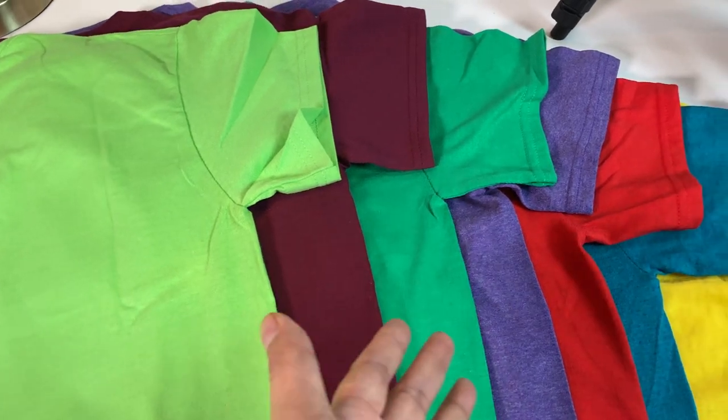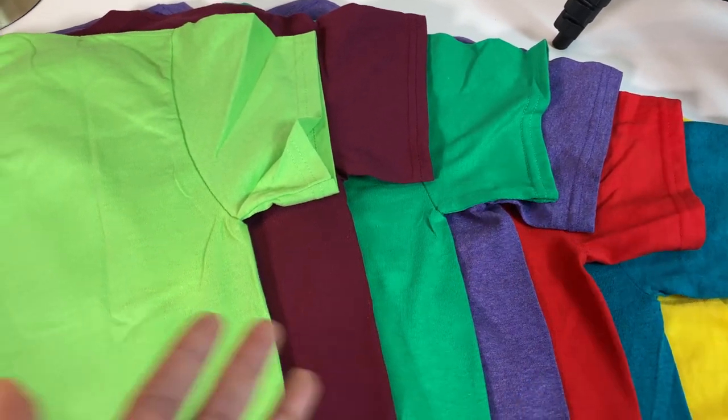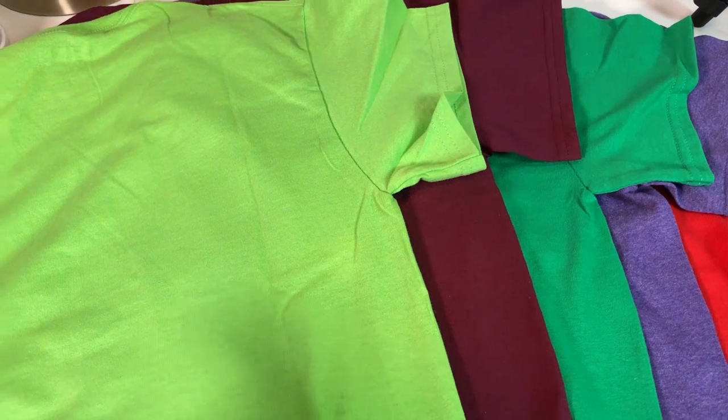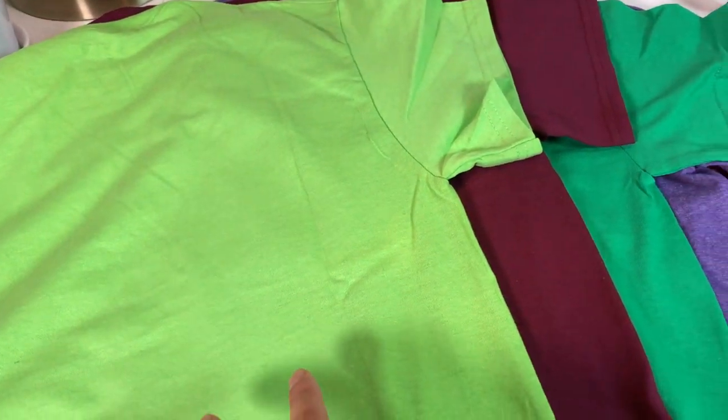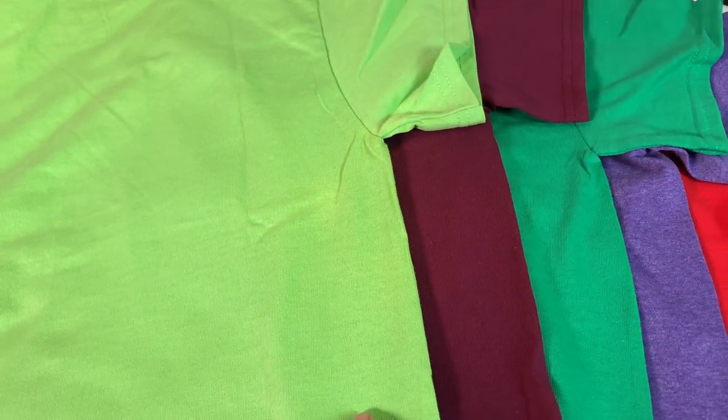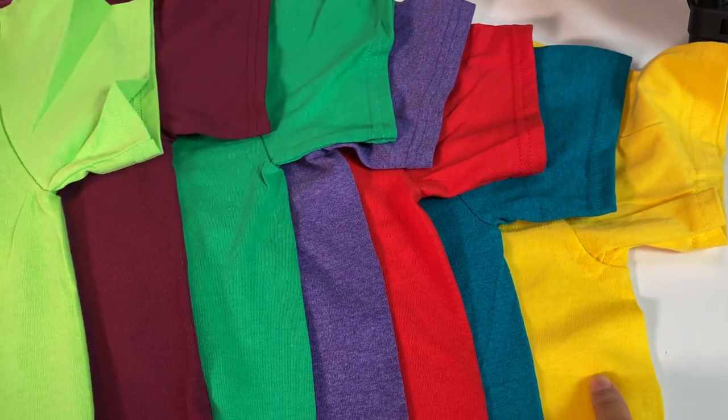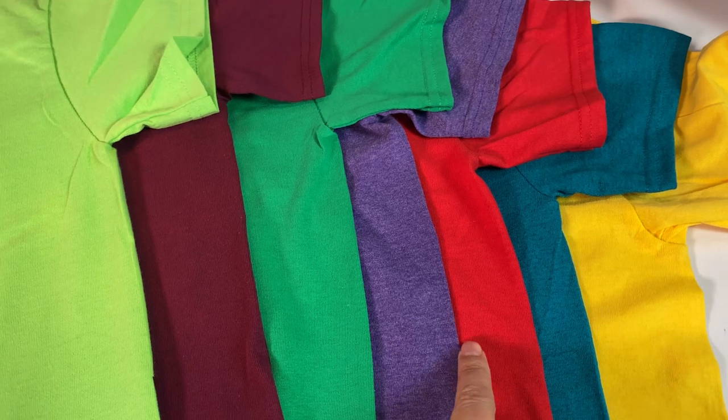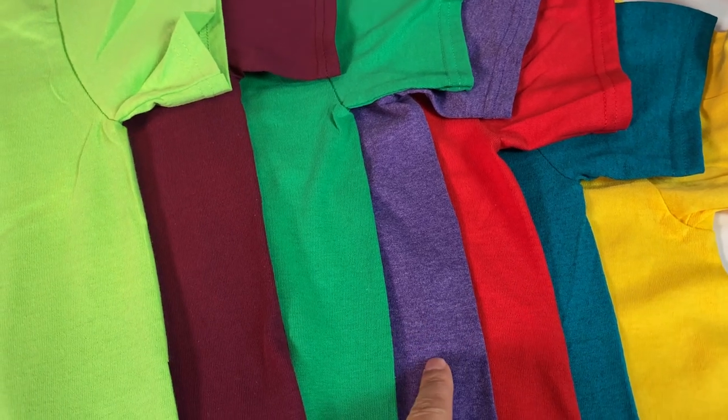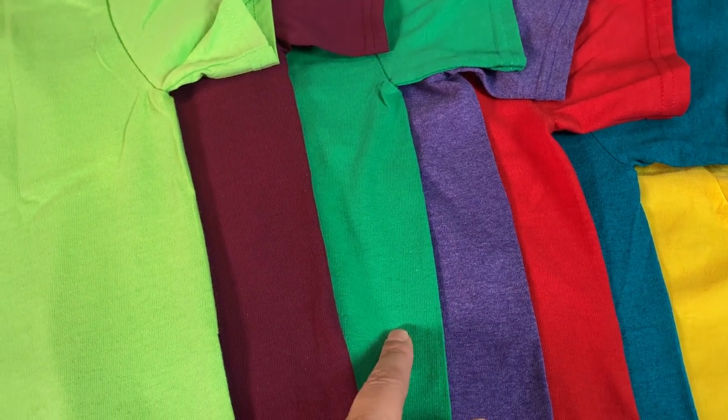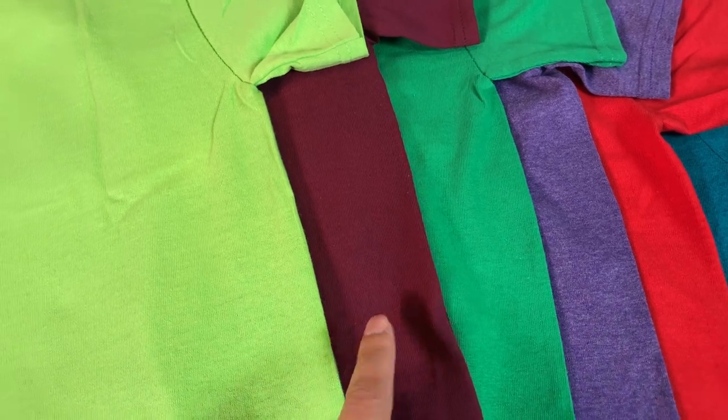These are the items you're going to need: seven different colored t-shirts or long sleeve shirts. You can get these at any craft store or big box store. I prefer to get neon green for Dopey because that's more recognizable, and then I got yellow for Doc, teal for Happy, red for Grumpy, purple for Sleepy, green for Sneezy, and maroon for Bashful.